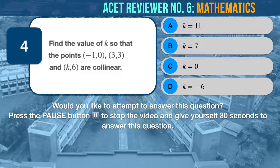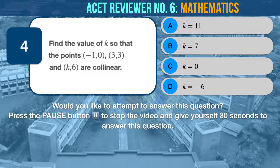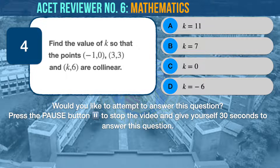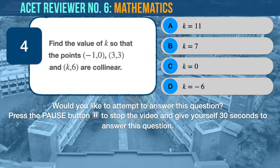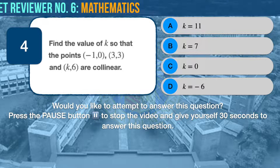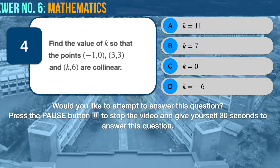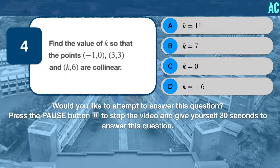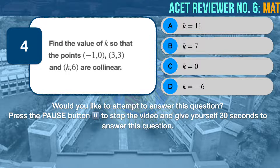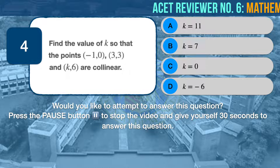Math question number 4. Find the value of K so that the points negative 1 and 0, 3 and 3, and K and 6 are collinear. A, K equals 11; B, K equals 7; C, K equals 0; D, K equals negative 6.